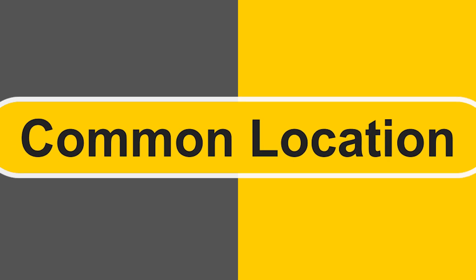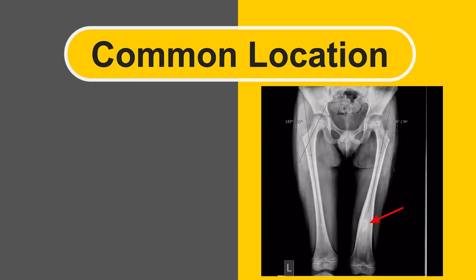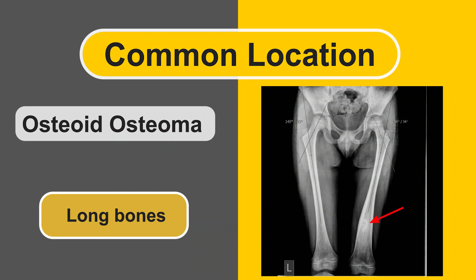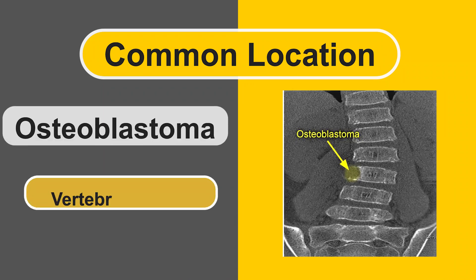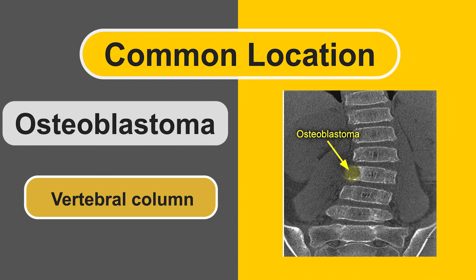Second feature: common location. Osteoid osteoma is commonly found in long bones, whereas osteoblastoma is commonly found in the vertebral column.